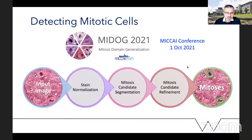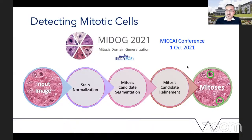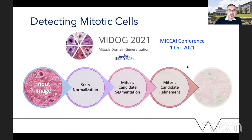A lot of times algorithms are trained on data from a number of centers, but as soon as they're taken to data from an unseen center they often fail quite badly. This contest was organized by colleagues in Germany to tackle this issue, specifically for mitotic cell detection. Our group's approach involved stain normalization to standardize the stain appearance, then segmenting candidates, refining them, and finally pinpointing exactly where those mitotic figures are.